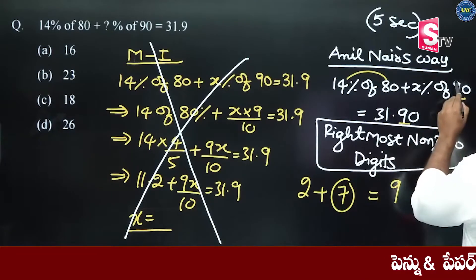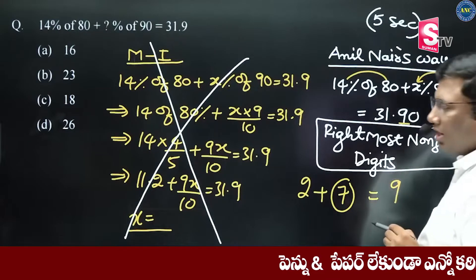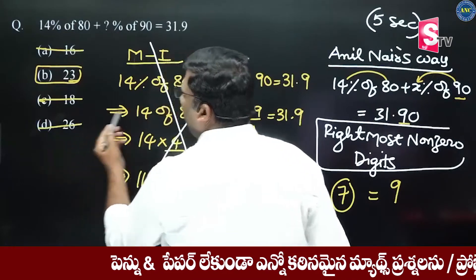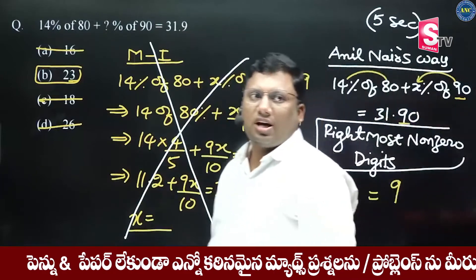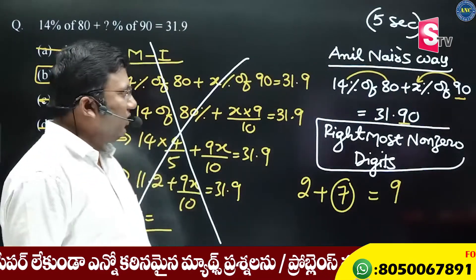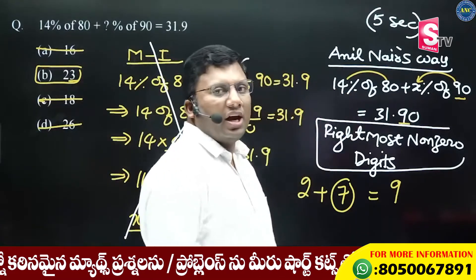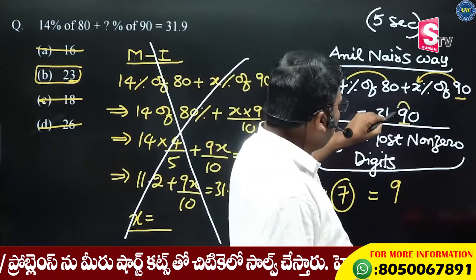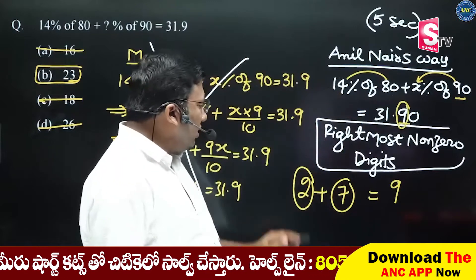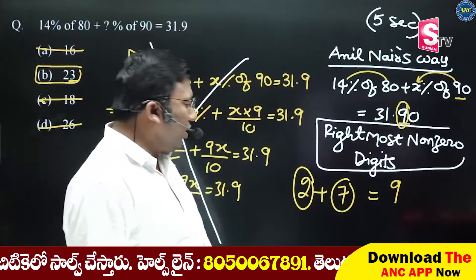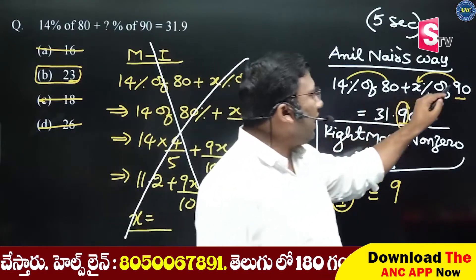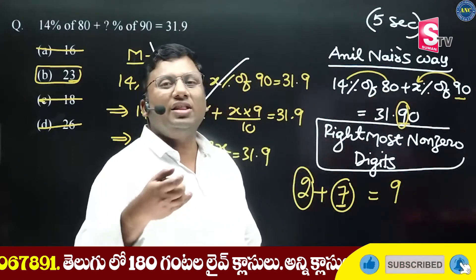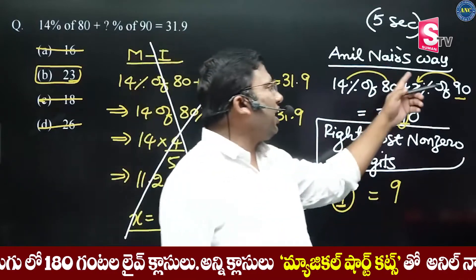If you take the rightmost digit and multiply: here there is 7, here there is 9 — 9 times 3 is 27, so the rightmost non-zero digit is 7. This is exactly your exam approach. For a second example: 64 and 32 — rightmost non-zero digit. 2 plus something gives 9, that means 7. 9 times 3 is 27.